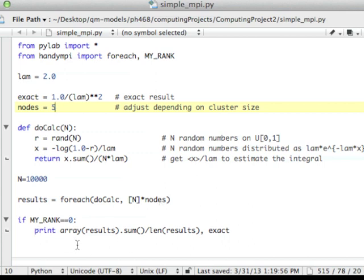Now notice down here, when I get to the bottom, I check to see if I'm the master node. And if I am, I make an array out of the results. I add them up, and I divide by the length of the results array. So I'm taking the average of these different results that came back from the different invocations of do calc. And I'm also going to print out the exact here.